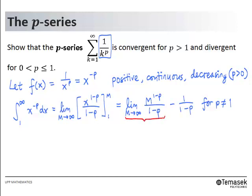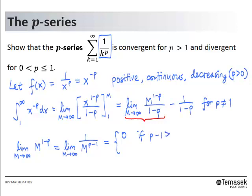Let us focus on the limit of m to the power 1 minus p, which we can rewrite as the limit of 1 over m to the power p minus 1. Using the principle about limits as m tends to infinity, this limit vanishes to 0 if p minus 1 is positive — in other words, if p is greater than 1 — and diverges to infinity if p minus 1 is less than 0, that is, if p is less than 1.